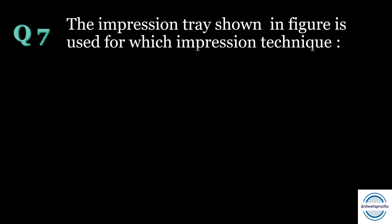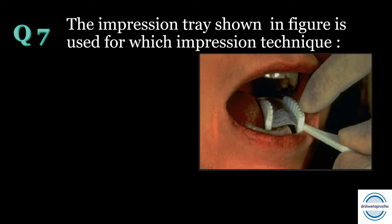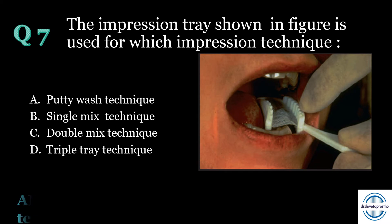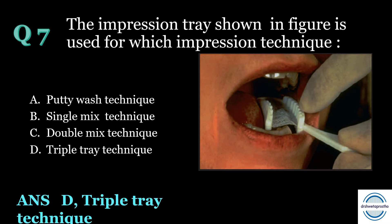Question number seven: The impression tray shown in the figure is used for which impression technique? A) putty wash technique, B) single mix technique, C) double mix technique, or D) triple tray technique? The answer is D — triple tray technique. It uses dual arch trays, so it is also called the dual arch impression technique. Polyether is the material of choice used with these trays to compensate for the flexibility of the dual arch trays.